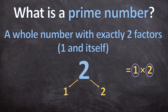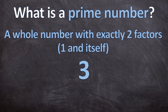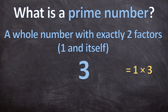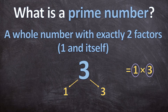Let's look at another example: 3. What whole numbers can we multiply together to get 3 as an answer? So 1 times 3 will have 3 as an answer — nothing else. So our two factors are 1 and 3, that is 1 and itself 3.